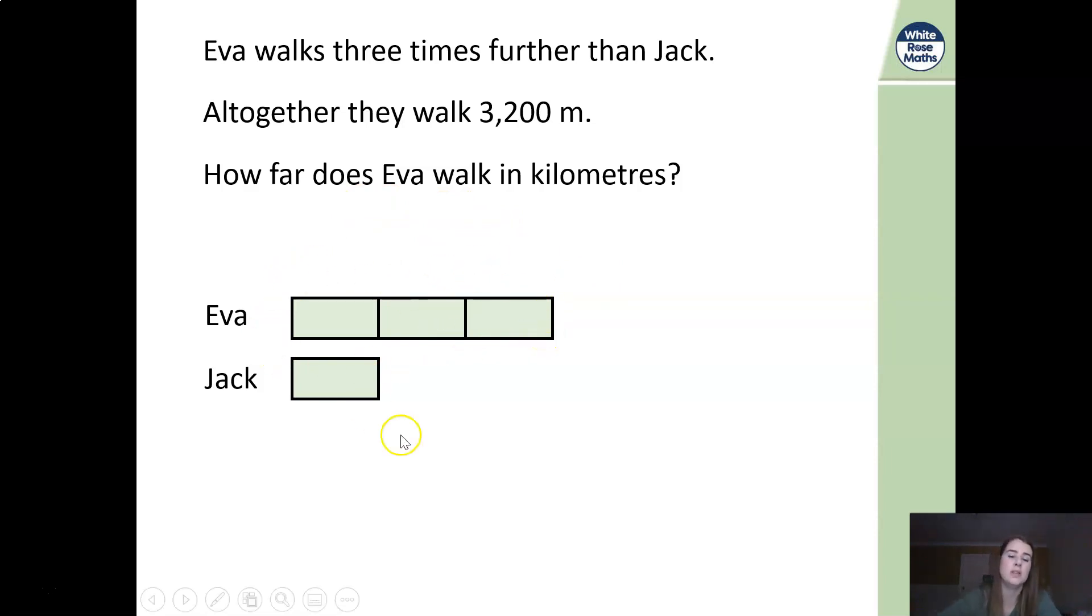What a lot of you did is you multiplied the answer by three when you did this for the test question. Now you're all sitting thinking I know exactly which question this was. What we need to do is we need to work out how much Jack walks so that we can work out what each one of these blocks is worth. Now we know that altogether they walked 3,200 meters. We need to work out how much Eva's walked all together. We've got one, two, three, four in total.